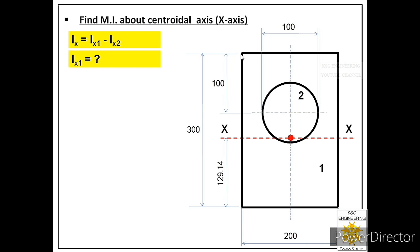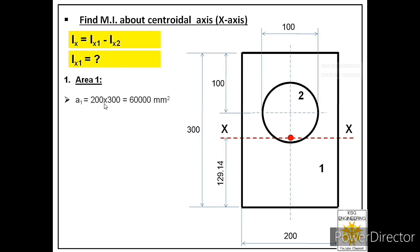IX1 is related to the complete rectangular area 1. The first calculation is its area A1, which equals length times width. The length is 200 mm and the width is 300 mm, so A1 = 200 × 300 = 60,000 mm².